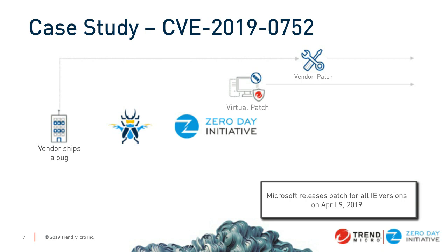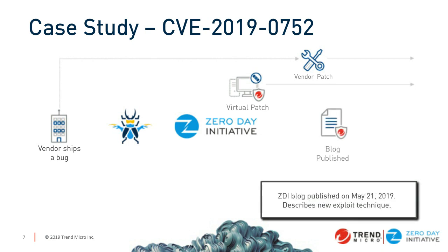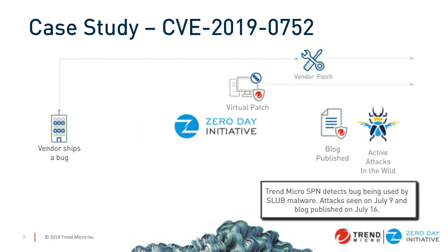This case gets more interesting because Simon didn't just discover a bug — he discovered an entirely new attack class. We blogged about it approximately six weeks after the patch was available, on March 21st, to make sure people had time to deploy the patch. We did detect attacks starting on July 9th, which is 154 days after the virtual patch was deployed.